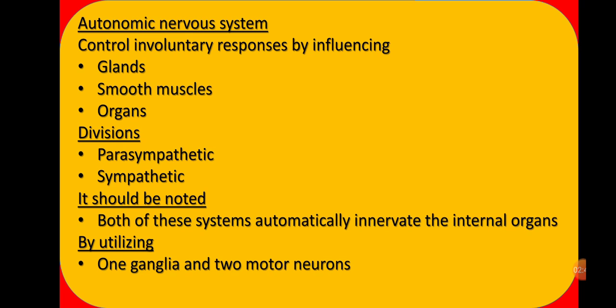These involuntary responses are generated by three types of factors inside the body: glands, smooth muscles, and different organs of the body. When any stimulus comes, different parts of the body work as effectors and cause the effect. So when involuntary responses occur, the things that cause the effect are glands, smooth muscles (which you have read about in your last chapter on sport and movement), and different body organs.